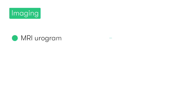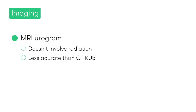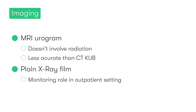An alternative imaging technique to be aware of in cases where we want to completely avoid radiation is an MRI scan — specifically, an MRI urogram. However, MRI is less accurate than CTKUBs at showing the presence of urinary tract stones. The last imaging modality to be aware of, which plays more of a role in monitoring the passage of confirmed stones in the outpatient setting, is a plain X-ray film. Whilst these used to be used more commonly as an acute investigation, they have now been largely superseded by CTKUB given its easy accessibility and diagnostic accuracy.